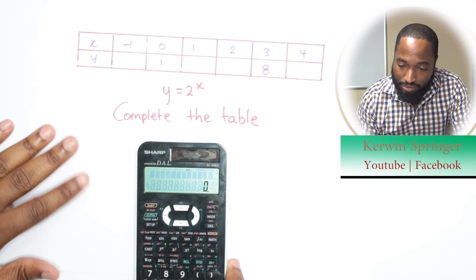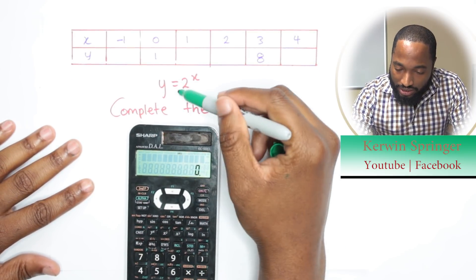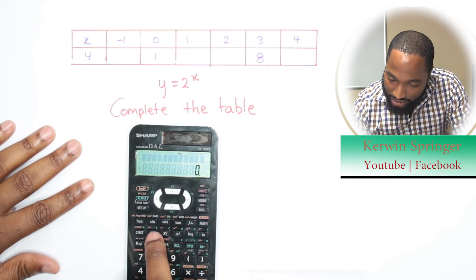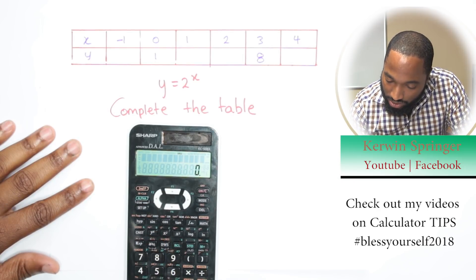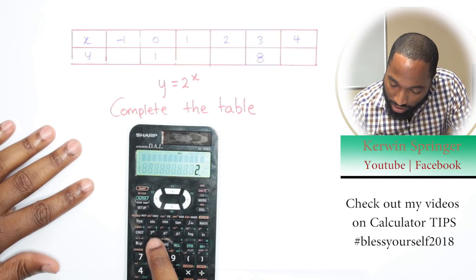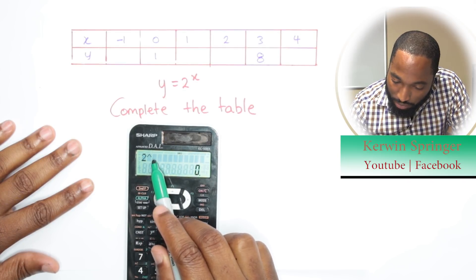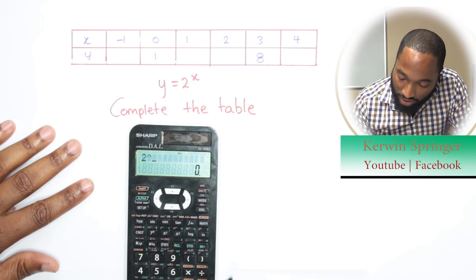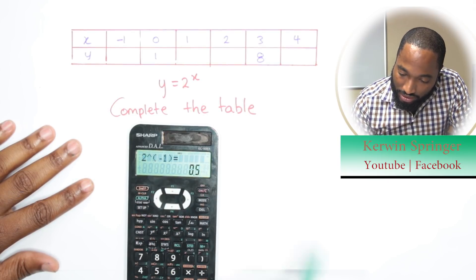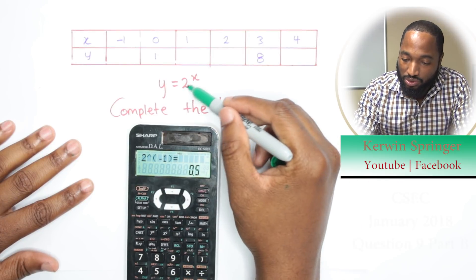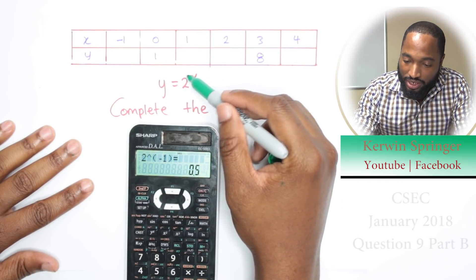For those who asked, y equals 2 to the power of x, how do you do this? Look right here, 2 to the power of x. So if I put 2 and I press this, I can put what I want here to represent x. If I want to put negative 1, I put negative 1 and I get the answer 0.5 or one half.